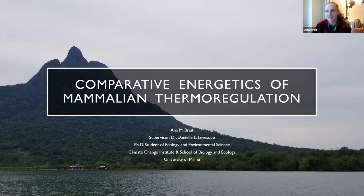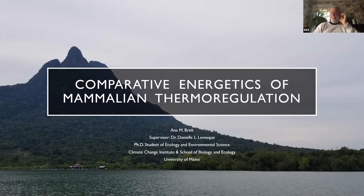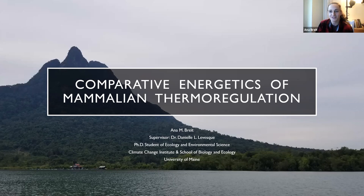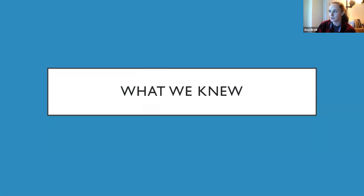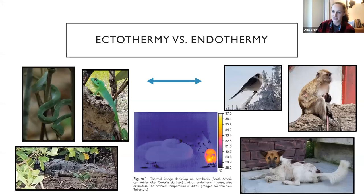I study mammalian thermoregulation — mammalian body temperature regulation. I work for Danielle Levesque and I'm part of the School of Biology and Ecology and the Climate Change Institute at the University of Maine. I'm going to give a brief overview of what we knew about thermoregulation and thought we had a pretty good handle on, then what we've been learning more recently, and finally what we will know after I hopefully get all my research done in this PhD. We really started learning a lot about body temperature regulation in the 1950s, so I'm going to talk about what we've learned since then — and some of it I'm going to explain why it's wrong.